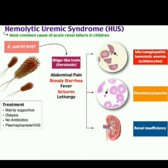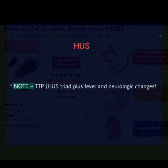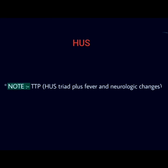Hemolytic Uremic Syndrome is the most common cause of acute renal failure in children, and the responsible organism is E. coli via its shiga-like toxin (verotoxin). Treatment is mainly supportive: dialysis, no antibiotics, plasmapheresis, or IV immunoglobulin.